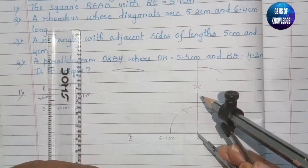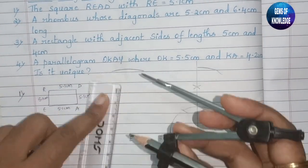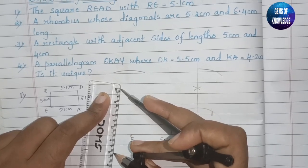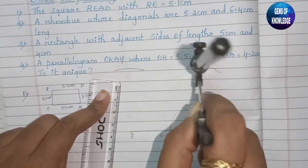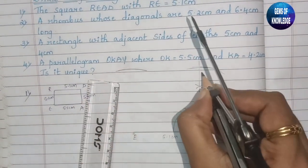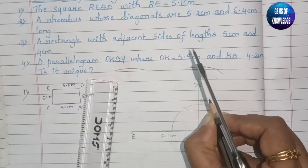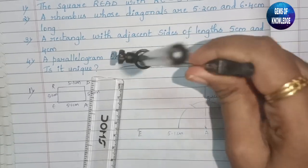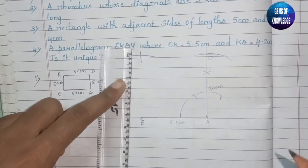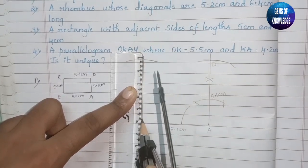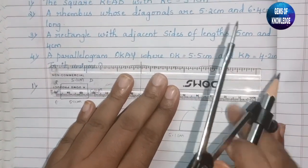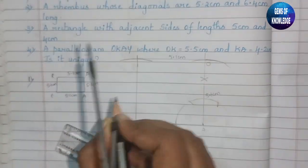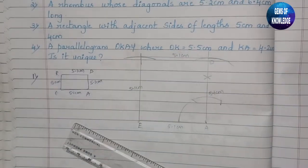We take the measurement of 5.1 centimeters along the 90-degree line to get point D. From D, we again take 5.1 centimeters, cutting an arc to find the last vertex. We join all the points, and as you can see, all four sides measure 5.1 centimeters automatically. That completes the answer for the first sub-question — the square READ.